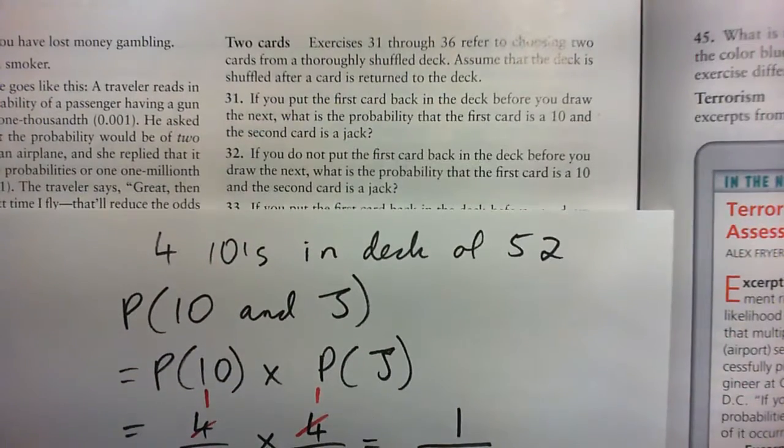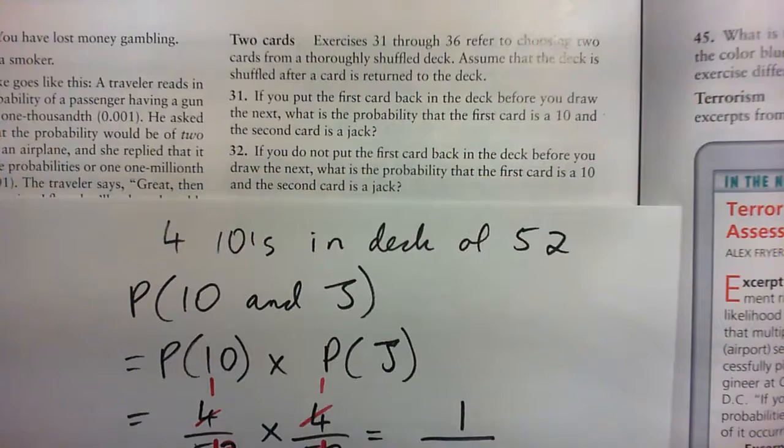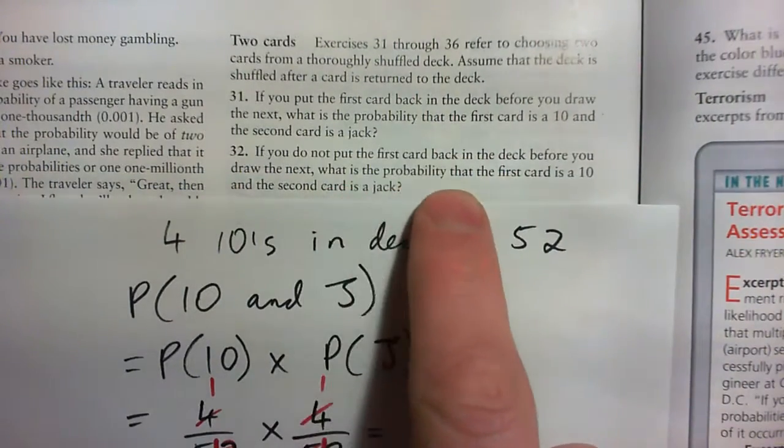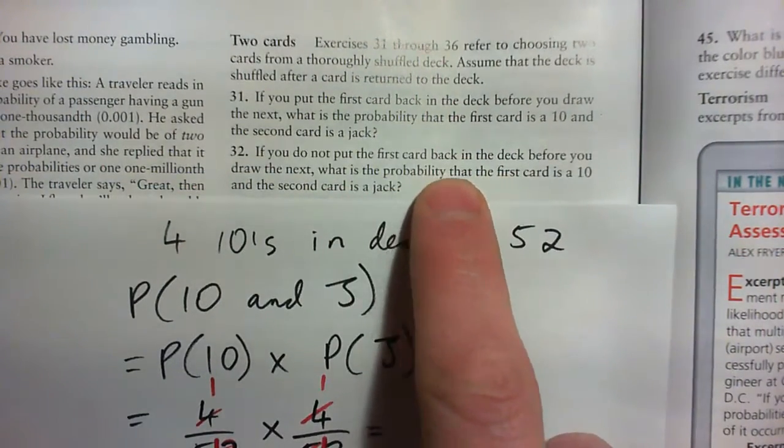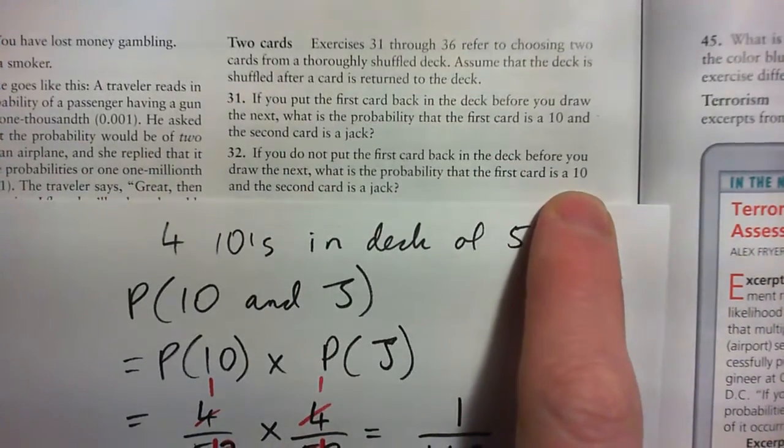Okay, I guess I'll do 32 in this same video then. Why not? So if you did not put the first card back in the deck before you draw the next, what is the probability the first card is a 10 and the second card is a jack?